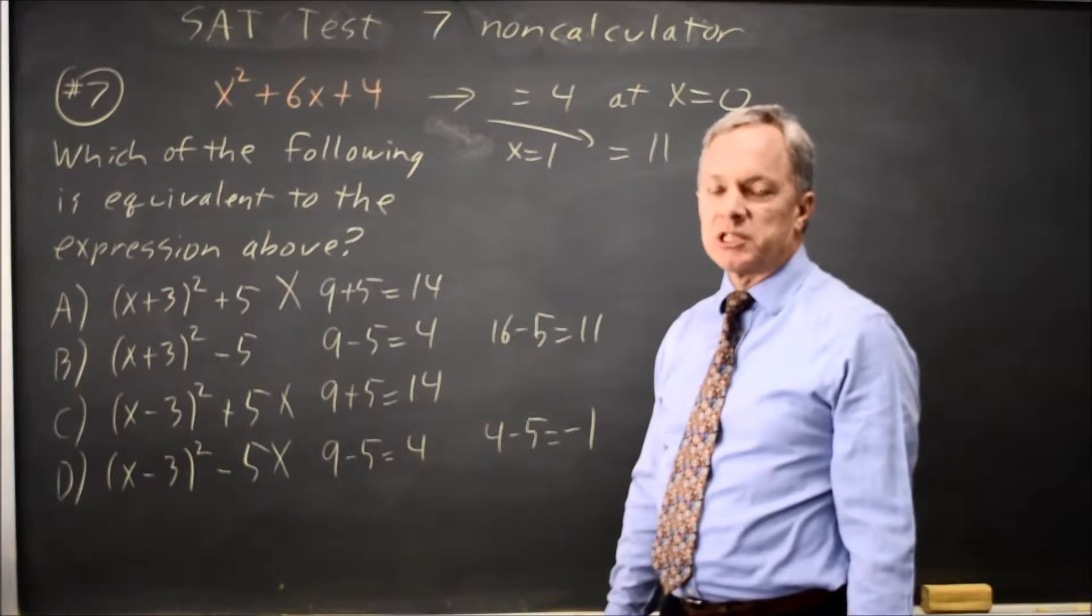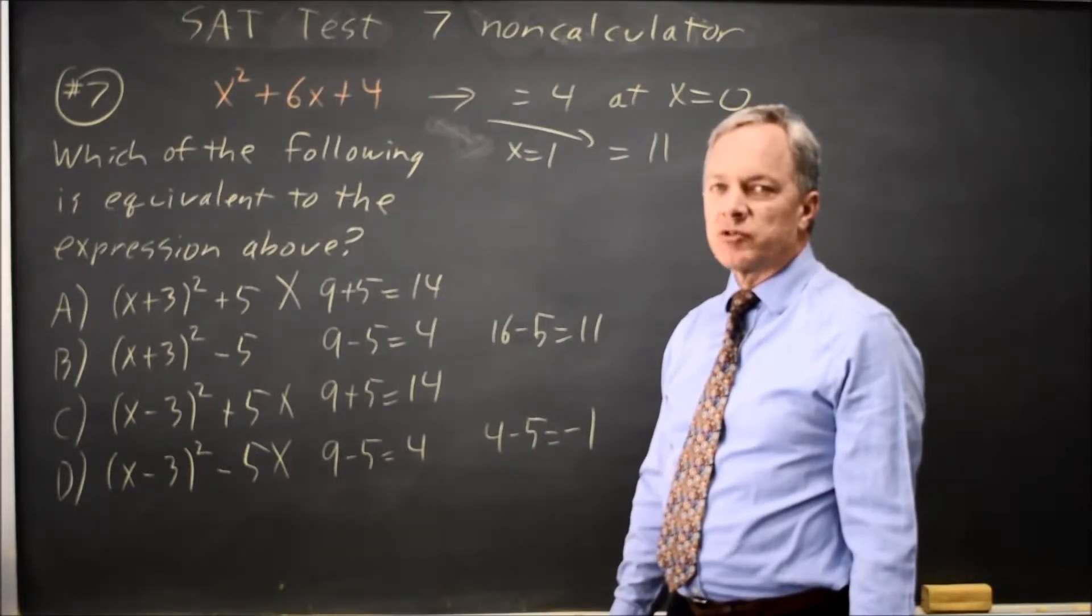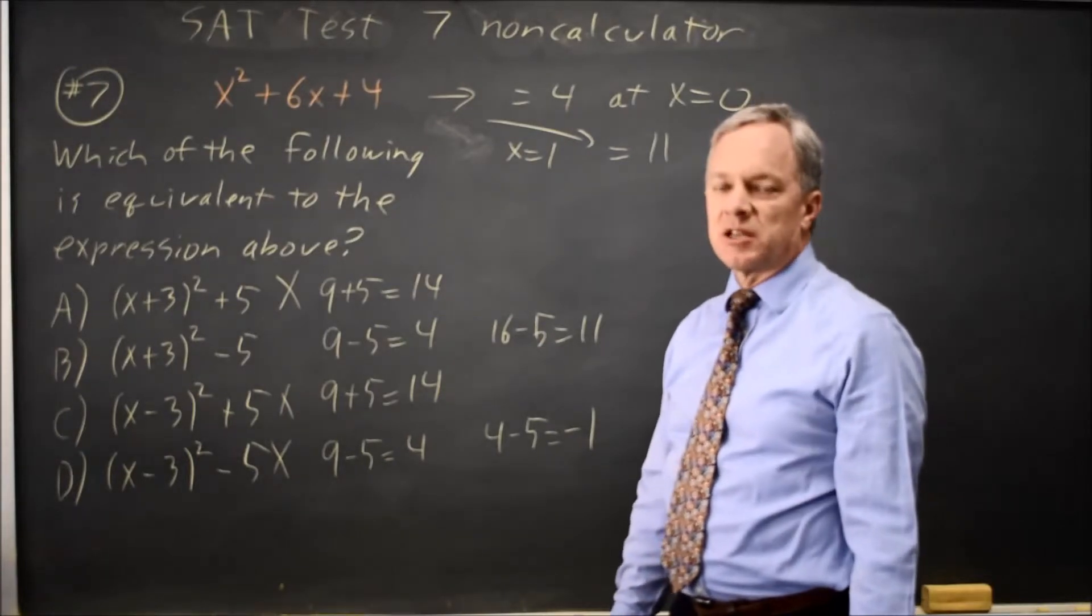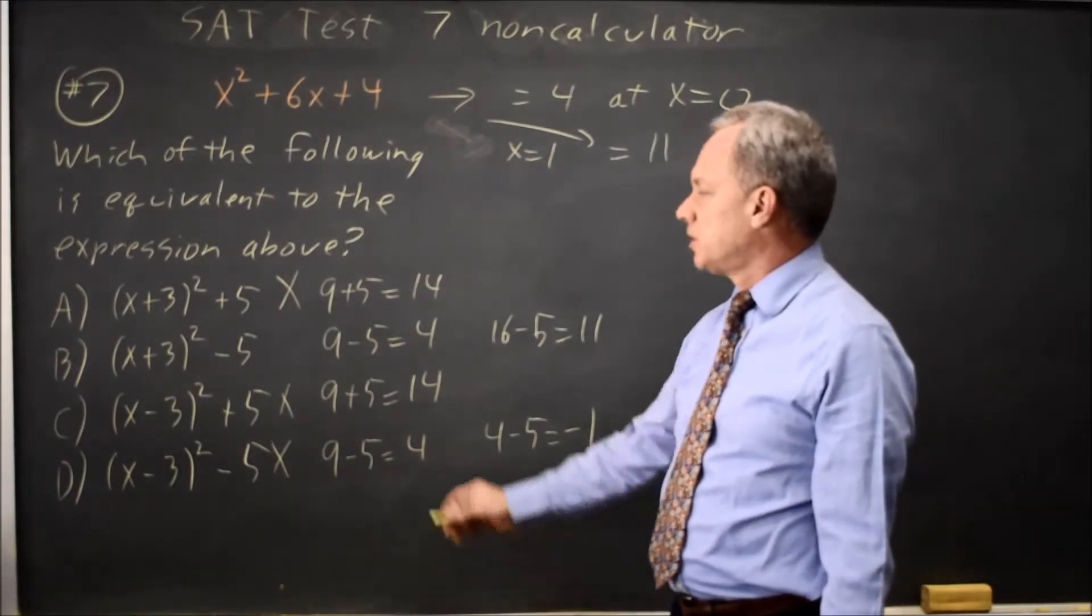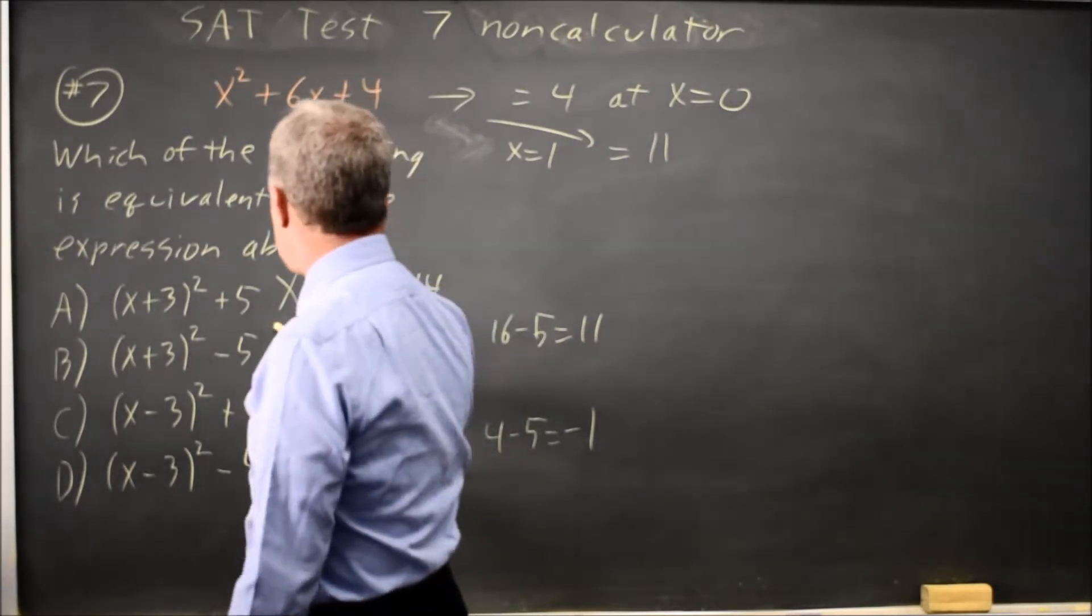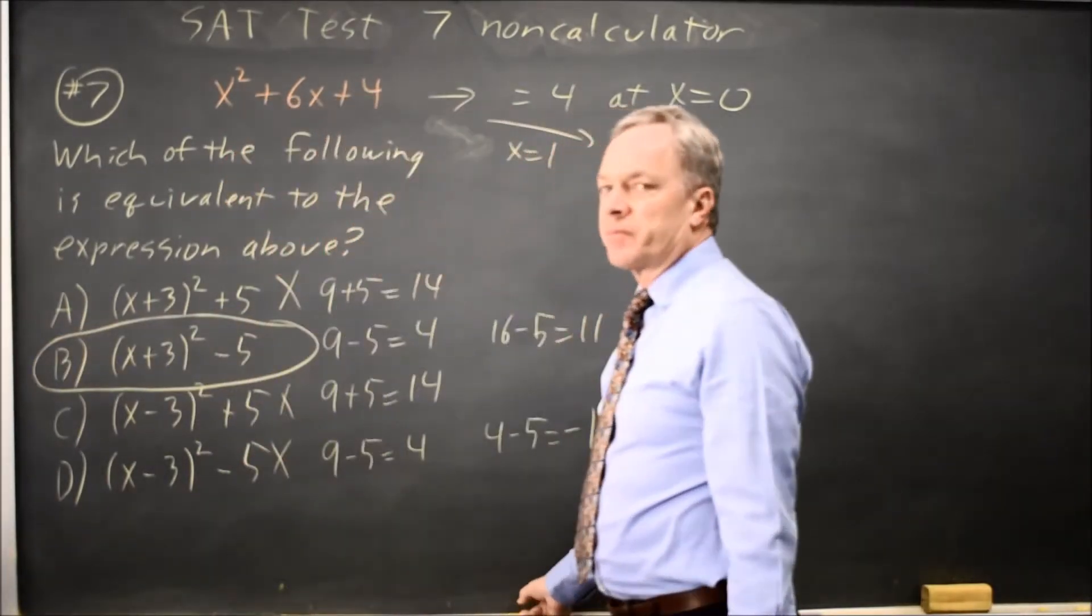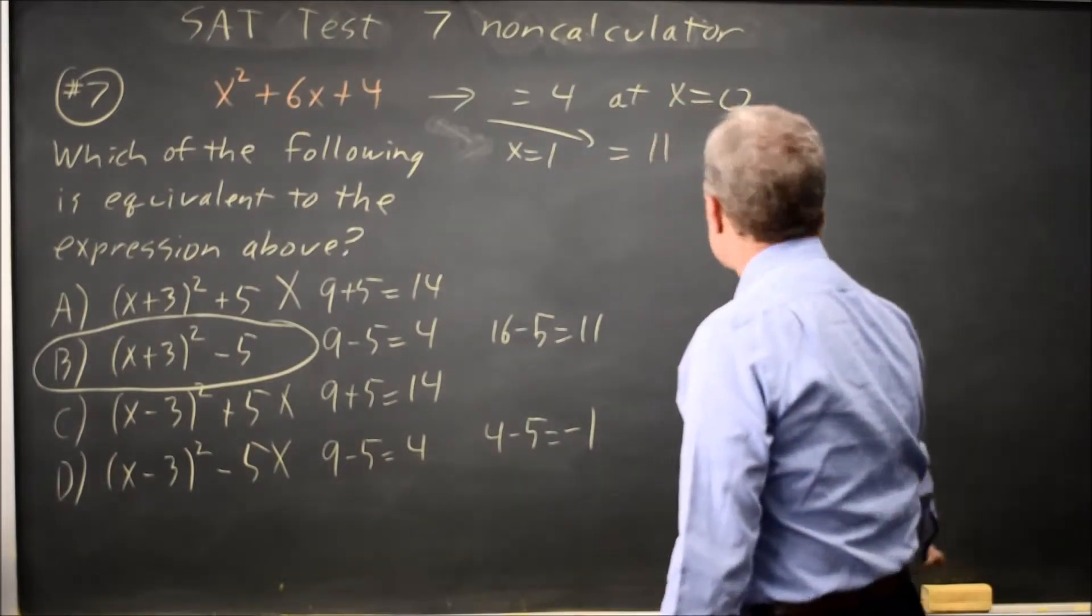because an equivalent expression has to give you the same result for all x, and this did not give the same result for x equals 1. Choice b gave the same result for both 0 and 1, so that would be the correct answer. That's a fairly quick method of solution.